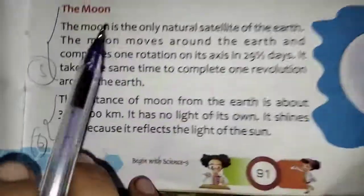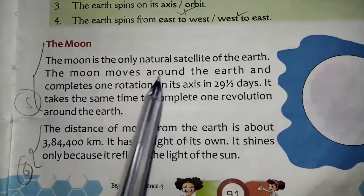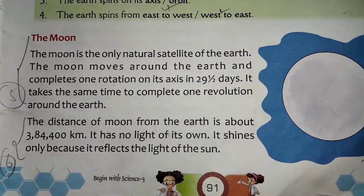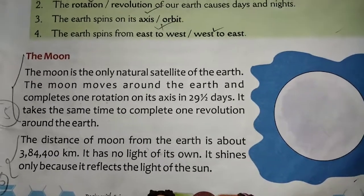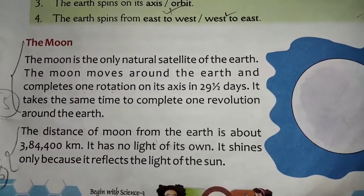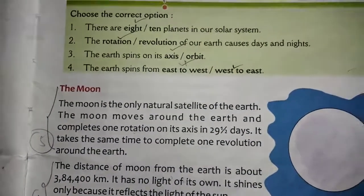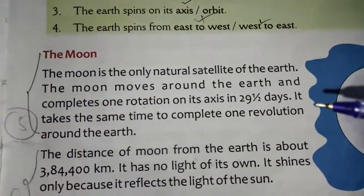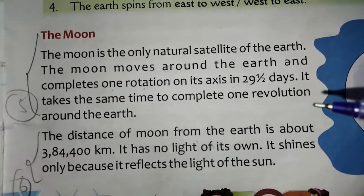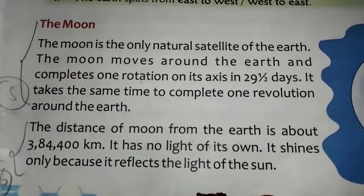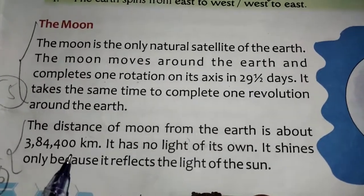Now, the moon. The moon is the only natural satellite of the earth. The moon moves around the earth and completes one rotation on its axis in 29 and a half days. It takes the same time to complete one revolution of the earth. The distance of the moon from the earth is about 384,400 kilometers.